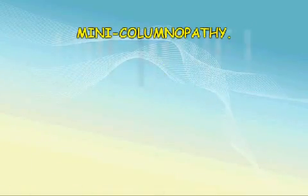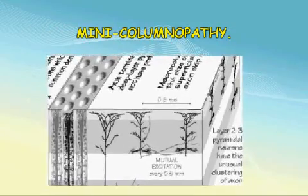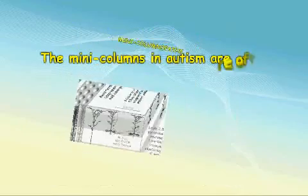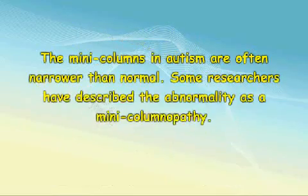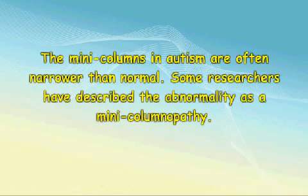Mini-columnopathy. The mini-columns in autism are often narrower than normal. It seems that the neuron diameters may be smaller, even though the numbers of neurons in the mini-columns is normal or above normal. Some researchers have described the abnormality as a mini-columnopathy.